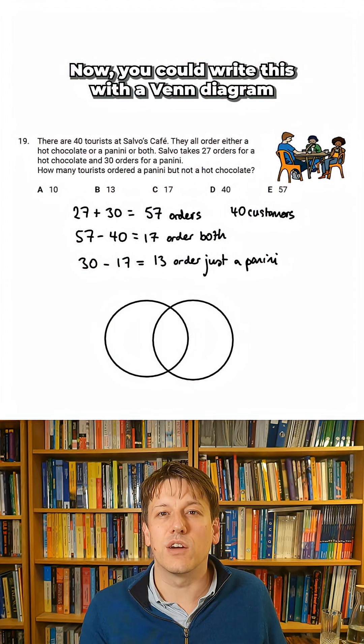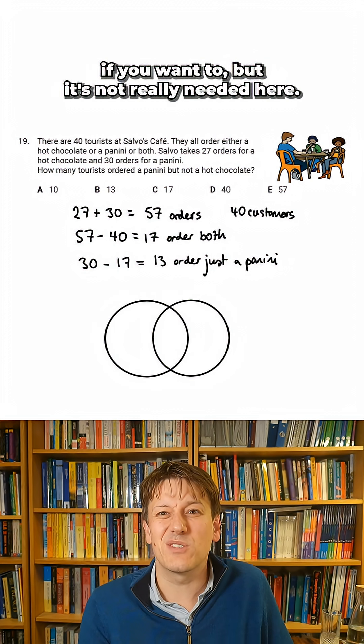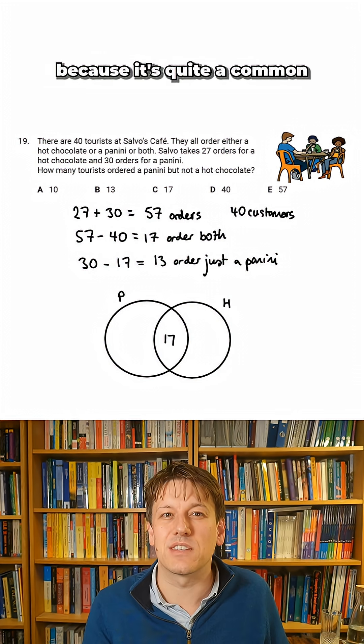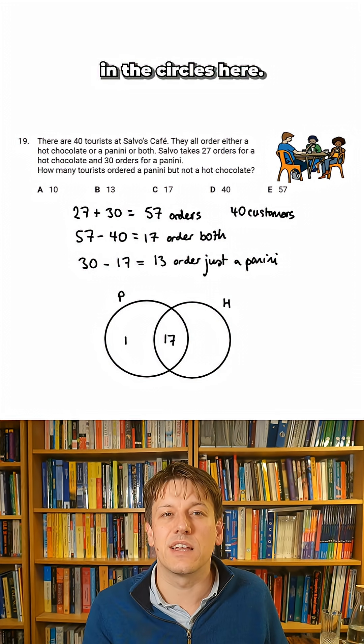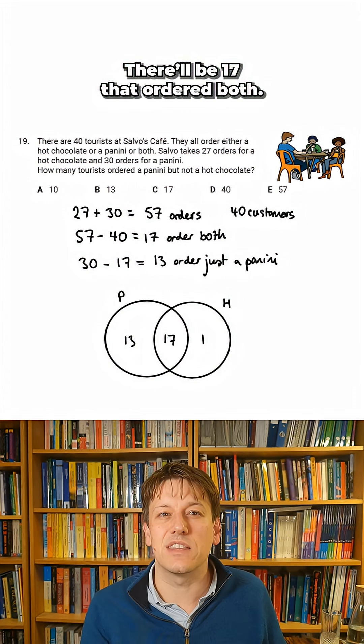Now you could write this with a Venn diagram if you want to but it's not really needed here. I'll just show you the diagram because it's quite a common way of representing this information. We'd put paninis and hot chocolates in their circles here and there'd be 17 that ordered both.